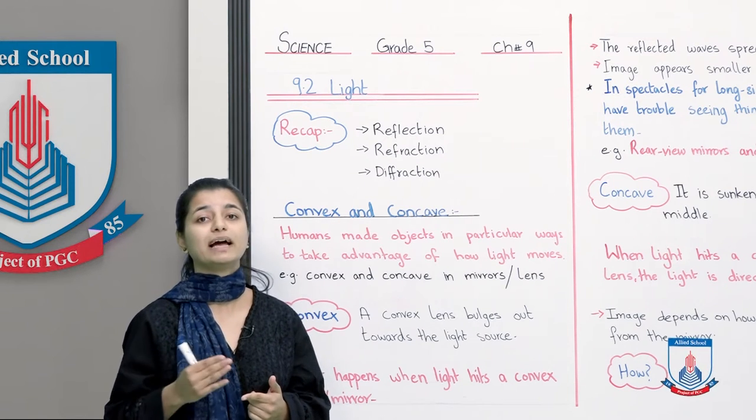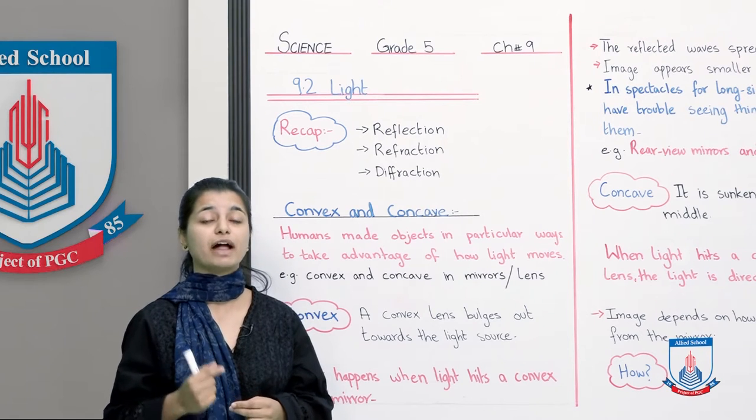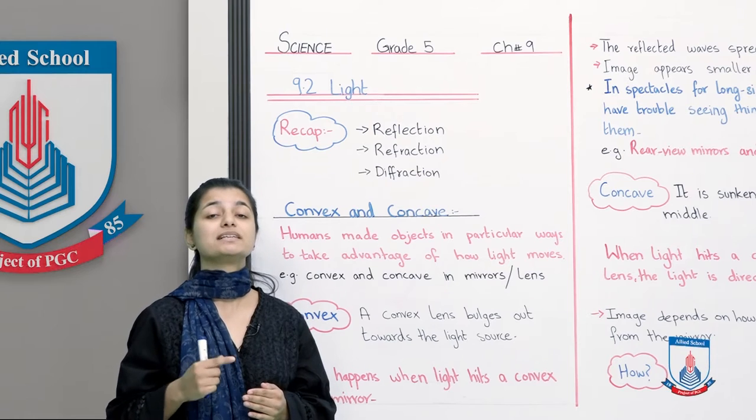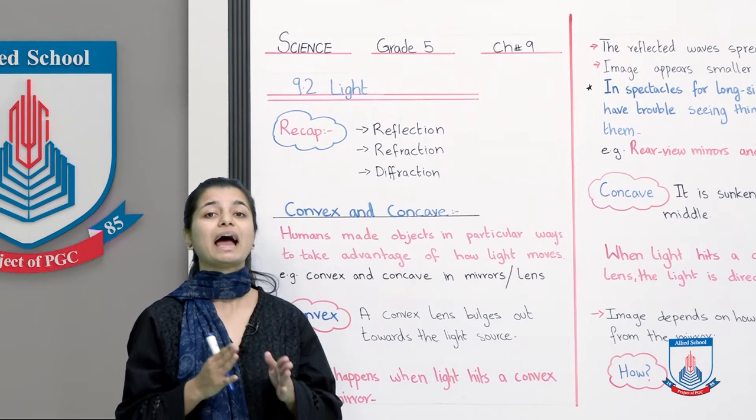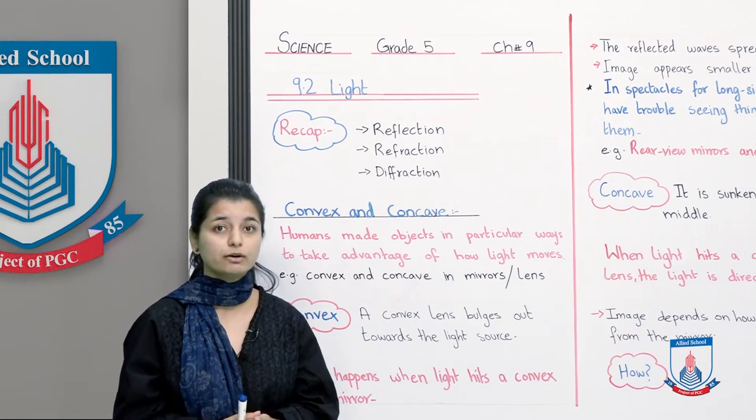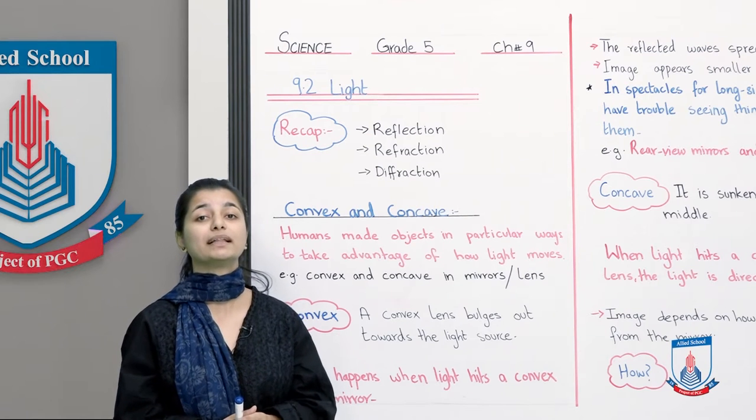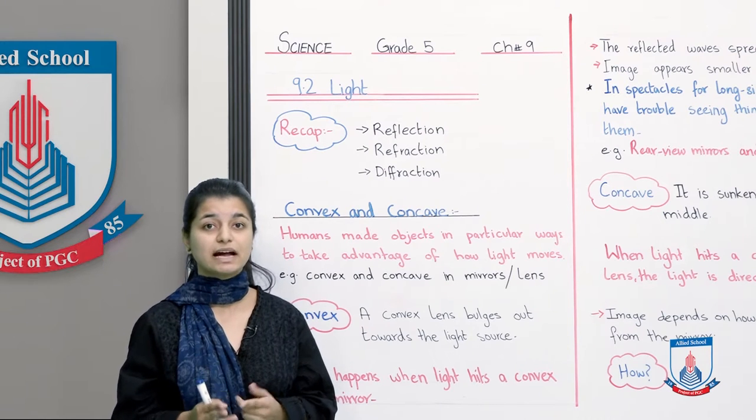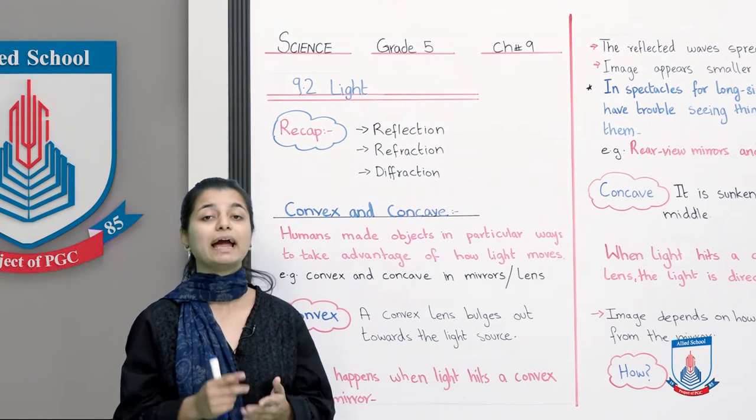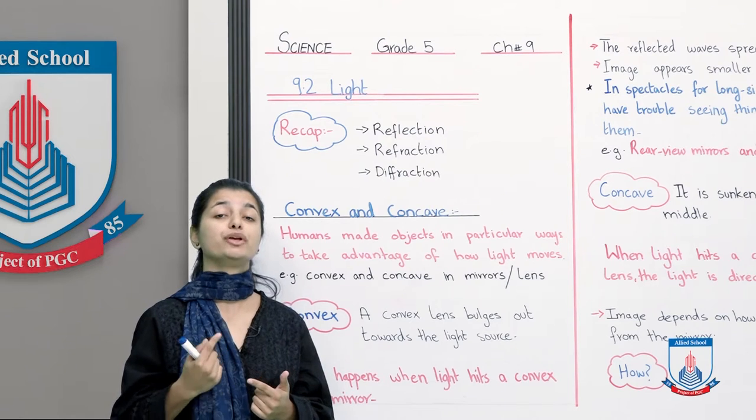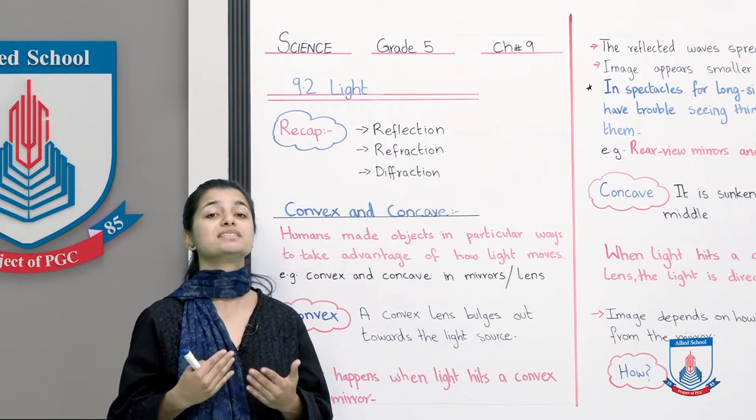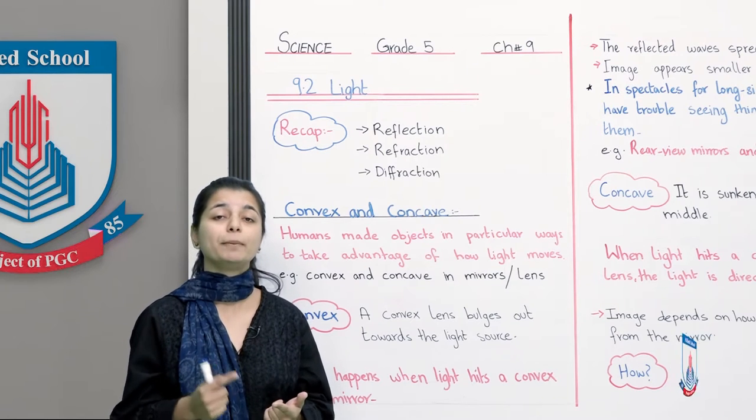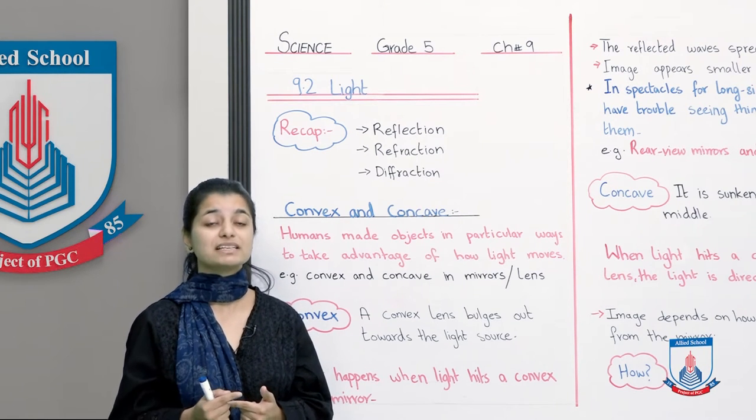So we have all these three definitions clear. Let's go ahead and talk about concave and convex lens. Basically, they are different types of lens that are used in different materials for light reflection, refraction, and diffraction. So we have these two different types of lens. First we read about convex lens.